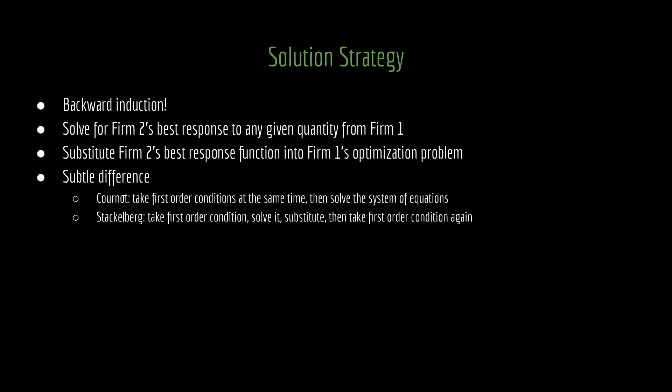How do we go about solving this? We're going to use backward induction. Backward induction means that we start at the end of the interaction, figure out what is going to happen at that end, and then work our way upward. Specifically, that means here we will be solving for firm 2's best response to any given quantity from firm 1. And then once we've derived that piece of information, we will substitute firm 2's best response function into firm 1's optimization problem and then solve for firm 1's best quantity of production. This is analogous to a subgame perfect equilibrium.